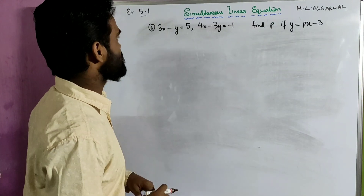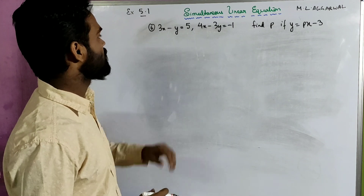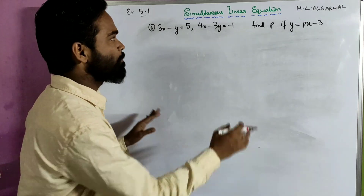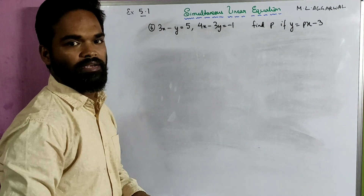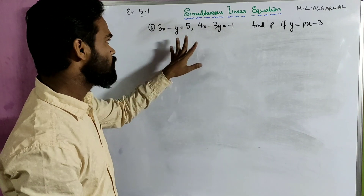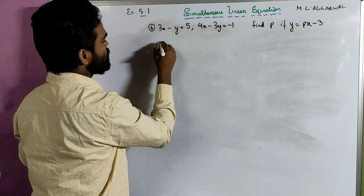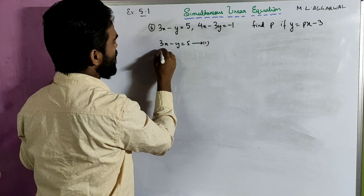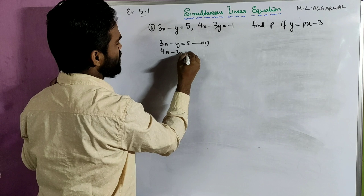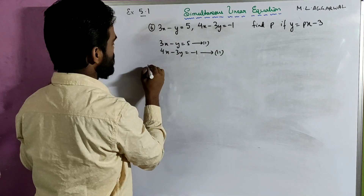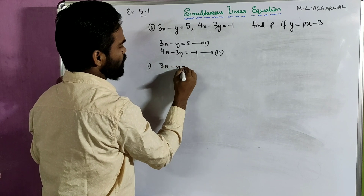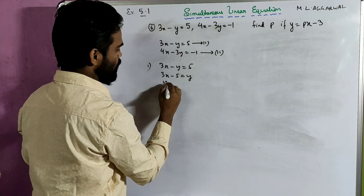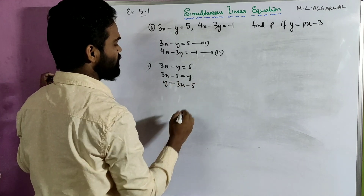Now look at the last sum for Exercise 5.1: solve the simultaneous equation 3x minus y equals to 5 and 4x minus 3y equals to minus 1, and find p if y equals to px minus 2. First we need to find the values of x and y. So equation 1 is 3x minus y equals to 5, and equation 2 is 4x minus 3y equals to minus 1. Taking the first equation and making y the subject: 3x minus 5 equals to y, so y equals to 3x minus 5.